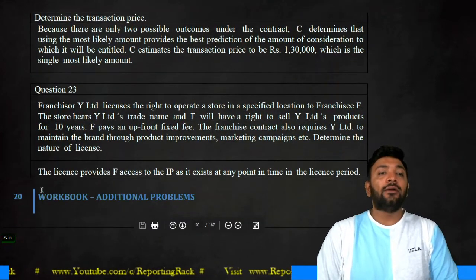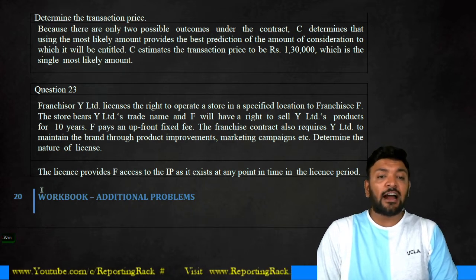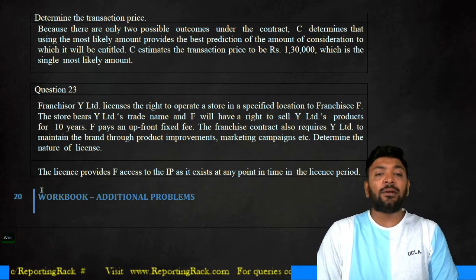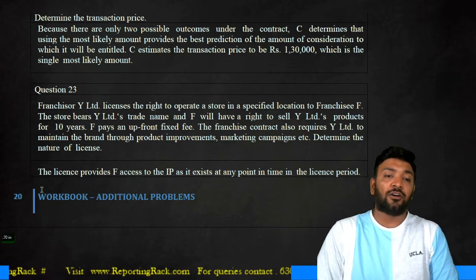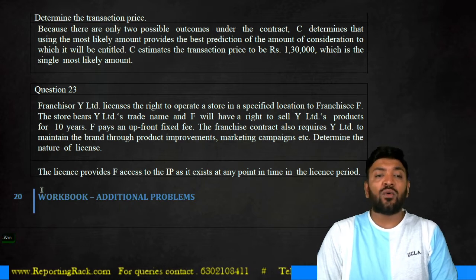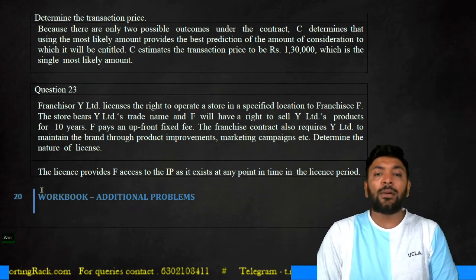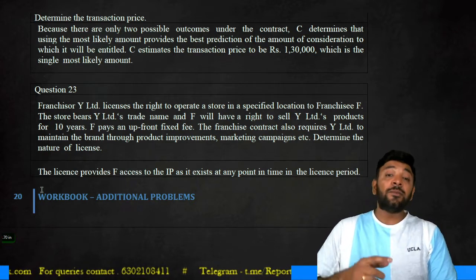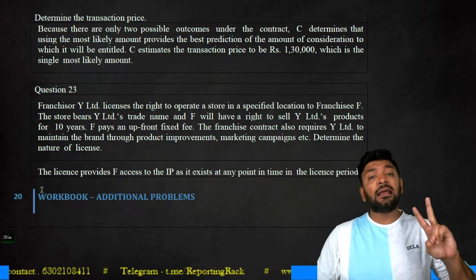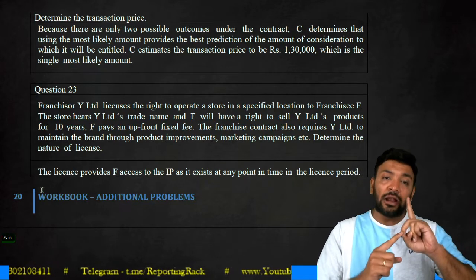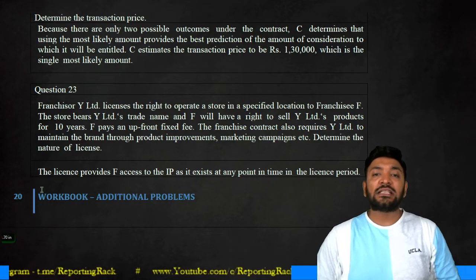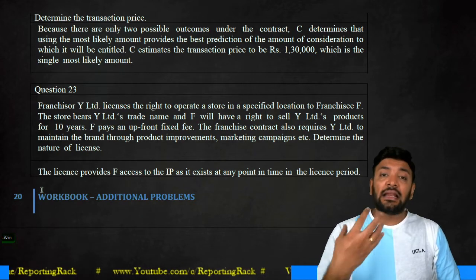Question number 23. Franchisor Y licenses a right to operate a store in a specific location to franchisee F. The store bears Y Limited's trade name and F has the right to sell Y Limited's products for 10 years. F pays an upfront fixed fee, and the franchise contract also requires Y Limited to maintain the brand through product improvements, marketing campaigns, etc. Determine the nature of the license. Licenses are of two natures — a license of intellectual property as it exists at the point of contract, or as the content gets created over time, i.e., recognized over a period of time or at a point of time.